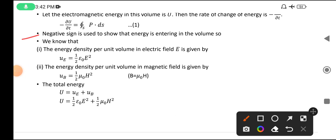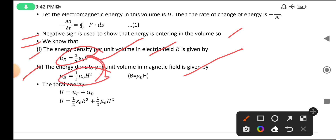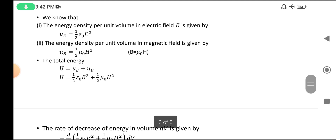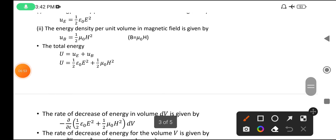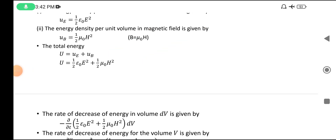The energy density per unit volume in the electric field is: u_E = (1/2)ε₀E². The energy density per unit volume in the magnetic field is: u_B = (1/2)μ₀H². These two are from the EM field, and adding them gives the total energy.